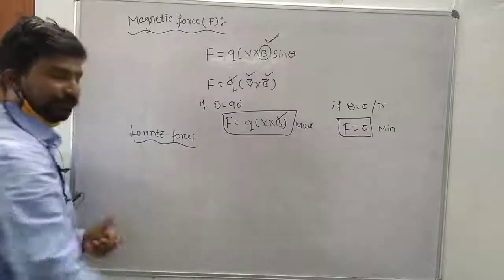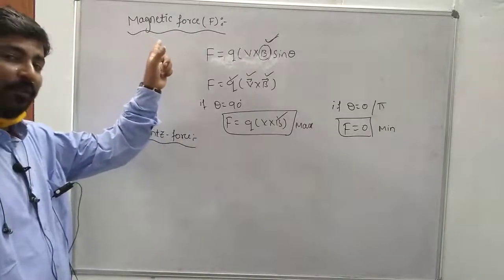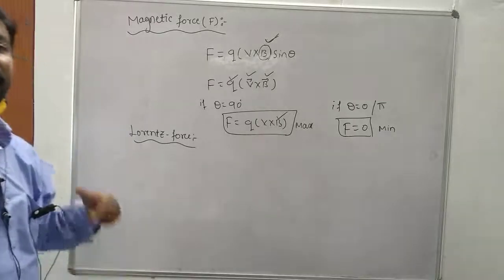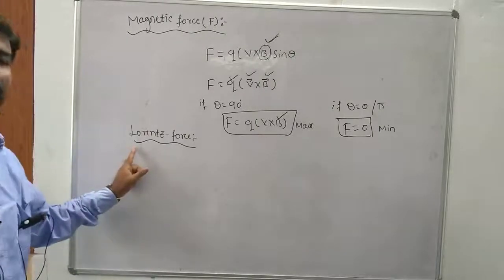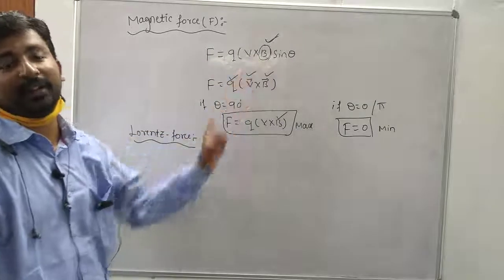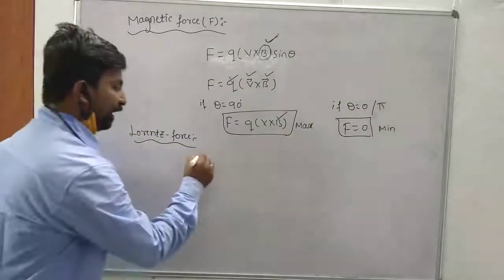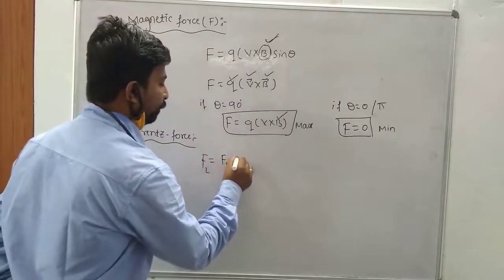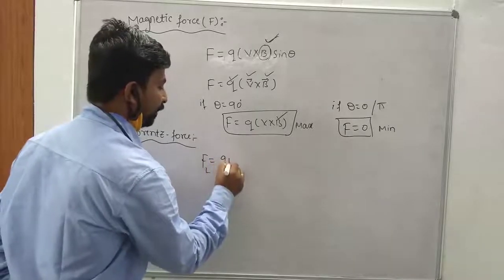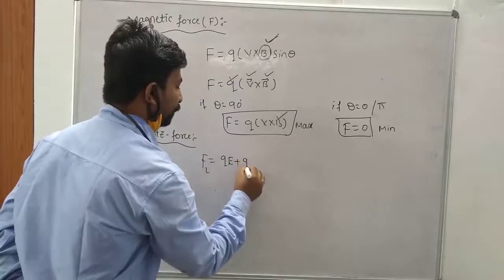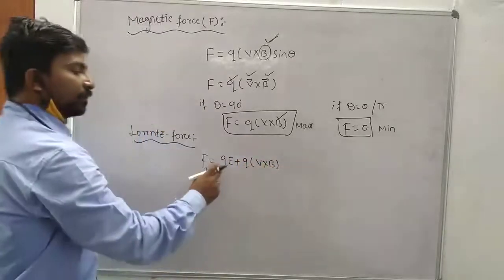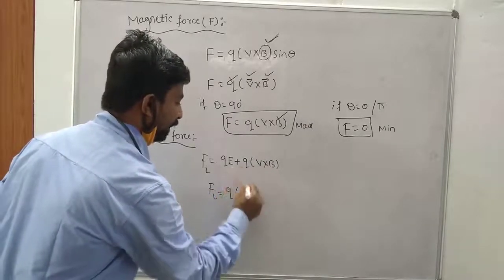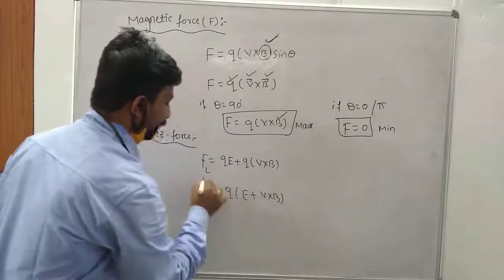Now Lorentz force. The force experienced by the moving charge in the region of both electric field and magnetic field is called Lorentz force. Therefore we can write: Lorentz force F_L equals F_E plus F_magnetic. Electric force is Q·E and magnetic force is Q(V × B). Since Q is common, the Lorentz force equals Q(E + V × B).